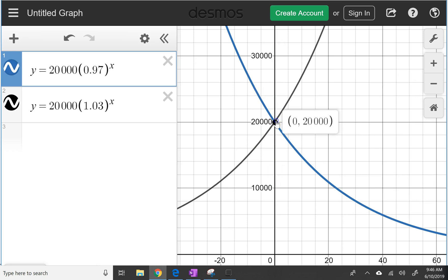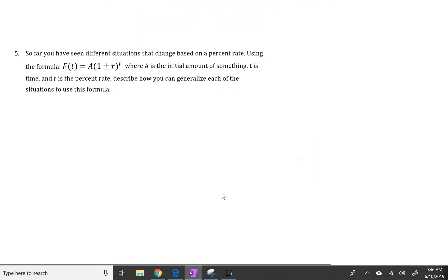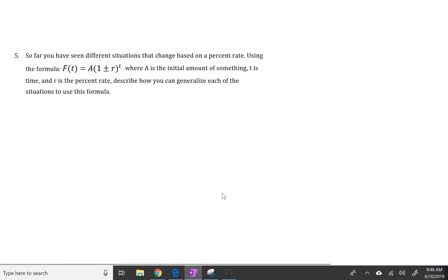So what you notice is we had different situations that were based on a percent rate, so we want to break down this formula: F(T) equals A times 1 plus or minus R to the T power. So in both cases with Mama Bigbucks, A was 20,000, and in both cases R was 0.03, which is the decimal representation of 3%.